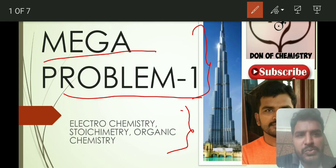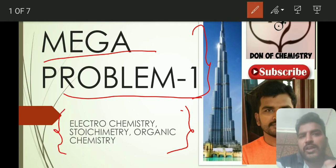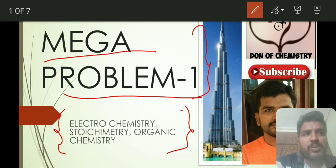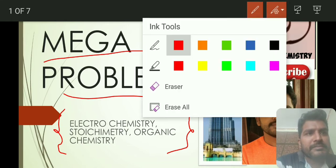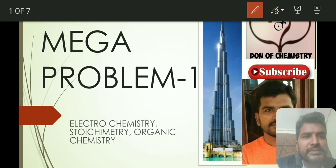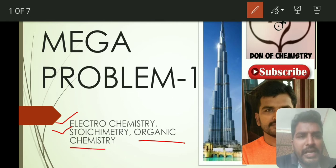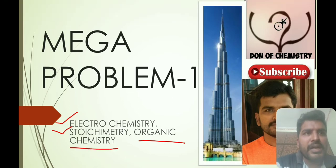For the simplification of the numerical, I am just taking normal values so they get easily cancelled. But as time goes on, I will increase the complexity of the numerical also. So in this first mega problem, I have made it by combining electrochemistry, stoichiometry, and organic chemistry application. Let us see what this mega problem is.